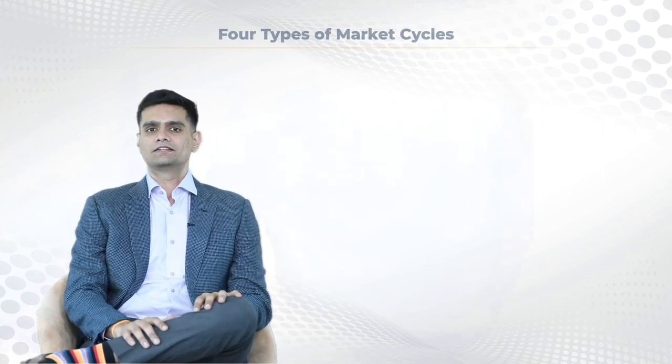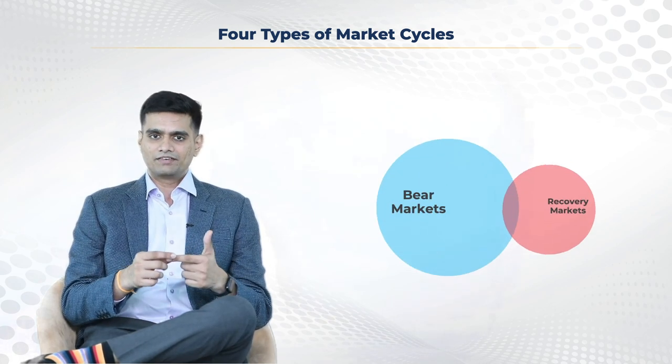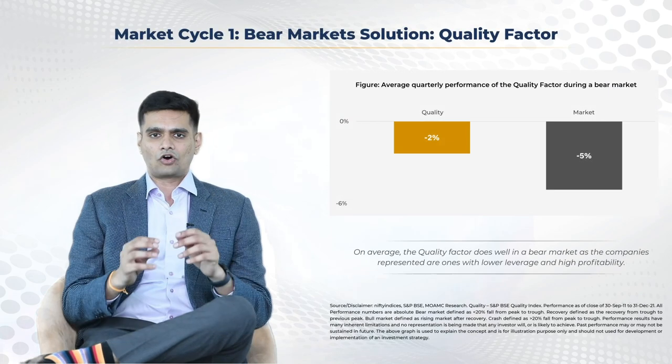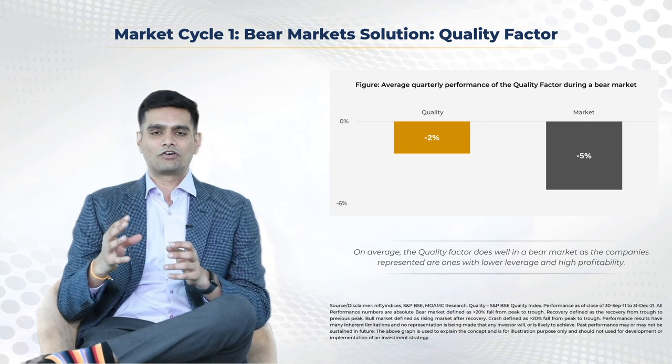We are trying to take exposure to different factors because these factors have historically demonstrated varying performances during different market conditions. To illustrate this, there are four major market conditions: bear market, recovery market, bull market, and market crashes. In a bear market scenario, when the broader market is typically underperforming fixed income instruments and even FDs at times, the quality factor has historically generated sizeable outperformance versus the market.